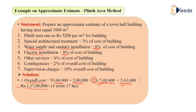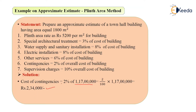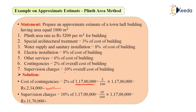Now they have given two more terms. Contingencies is 2% of the overall cost of building and supervision charges are 10% of the overall cost. The overall cost we have calculated is 1 crore 17 lakh. So 2% of that will be 2 by 100 into 1 crore 17 lakh, which comes as 2 lakh 34,000 rupees. Supervision charges are 10% of 1 crore 17 lakh, which comes as 11 lakh 70,000 rupees.